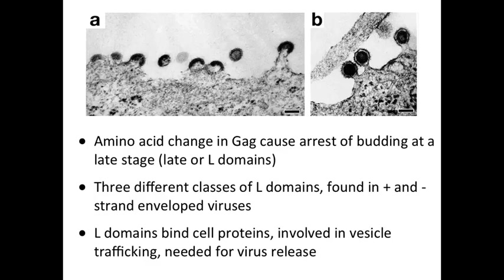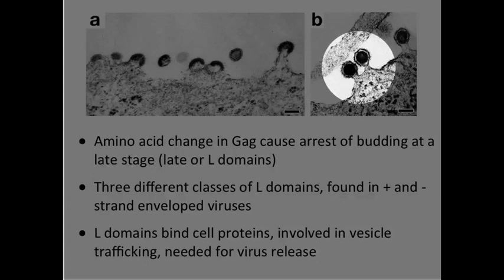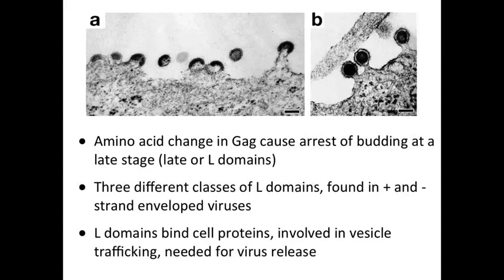Now a number of years ago, as sequences were discovered in a variety of viral glycoproteins by mutagenesis, they were called L or late domains. These were initially found in retroviruses — amino acid changes in the Gag structural protein that caused arrest of budding. The phenotype was that virions would start to bud out but most of them would never come off; they would remain attached by a stalk.